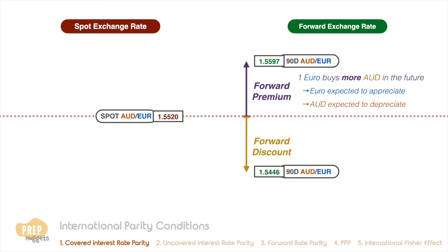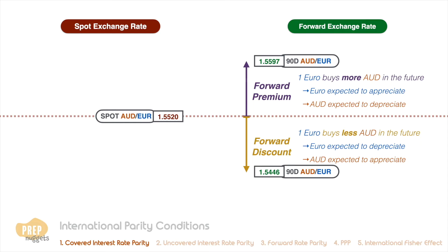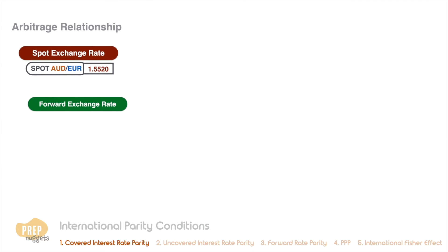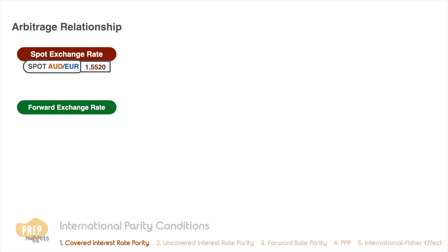And if the forward rate is lower, we say there's a forward discount. Since one euro buys less AUD in the future, we expect the euro to depreciate against AUD and AUD to appreciate against the euro. Now, one important question we promised to address is what determines forward premiums or discounts. To answer this, we need to understand the arbitrage relationship between the spot rate, forward rate, and the interest rates in the two countries.